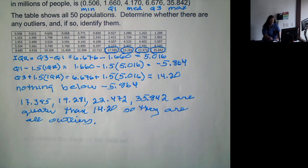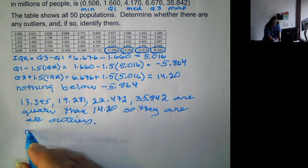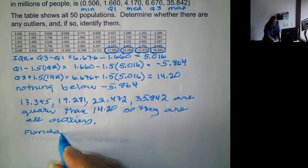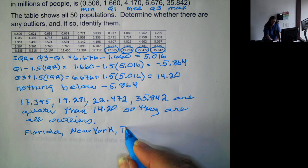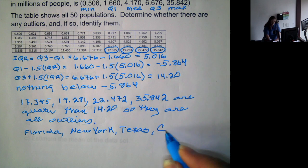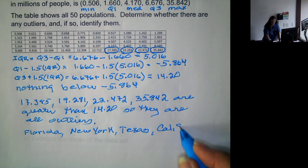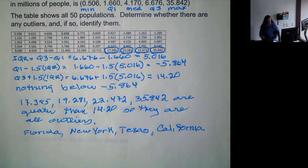And these are the states of Florida, New York, Texas, and California. So the four most populous states would be considered outliers when combined with the rest of them.